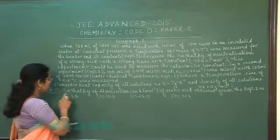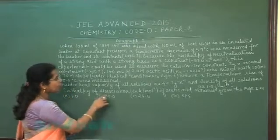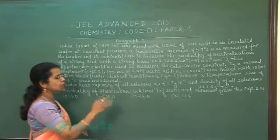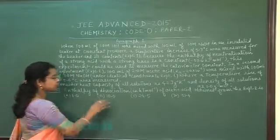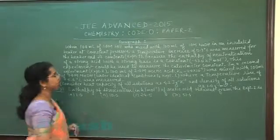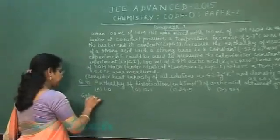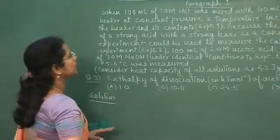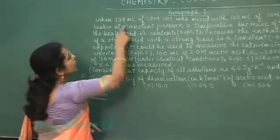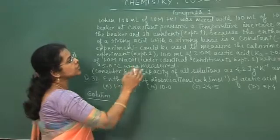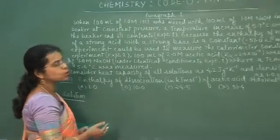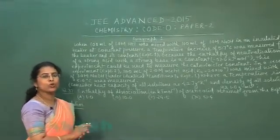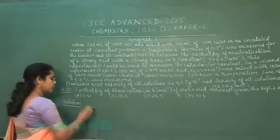Now the question is question number 37. Enthalpy of dissociation in kilojoule per mole of acetic acid obtained from experiment 2? Options are given and we have to find the correct answer. In this question two experiments are given. First we are considering the first experiment: 100 milliliter of 1 molar HCl mixed with 100 milliliter of 1 molar NaOH. It means the reaction is taking place between 0.1 mole of a strong acid with 0.1 mole of a strong base.